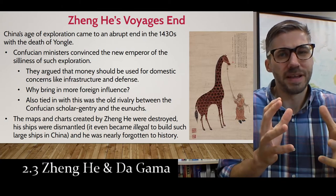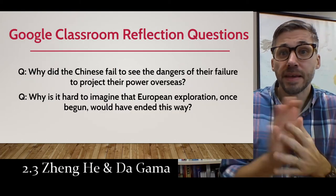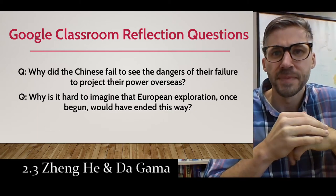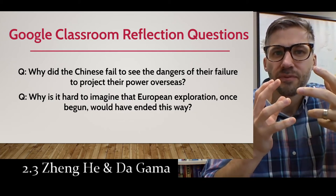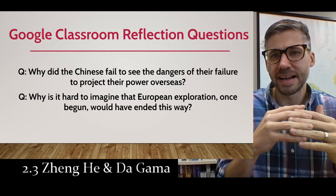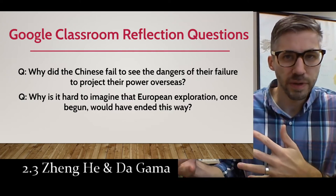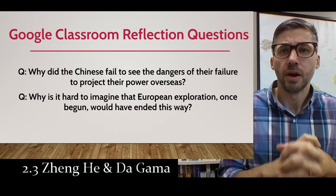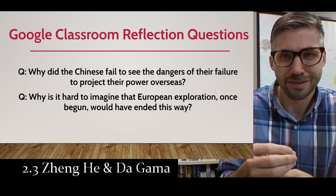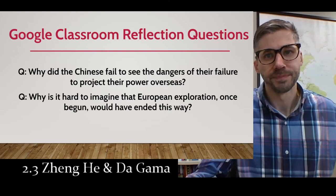This leads to one of today's reflection questions, which will be on Google Classroom. Option one: why did the Chinese fail to see the dangers of their failure to project power overseas? What about their history, ideology, or human nature caused them to fail to see the consequences? Option two: flip it around — why is it hard to imagine European exploration, once started, ever ending the same way? That was actually an exact question from Guns, Germs, and Steel.